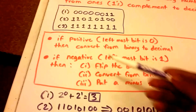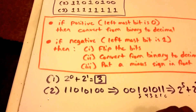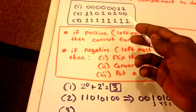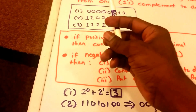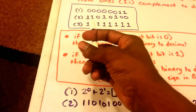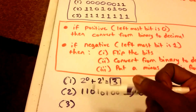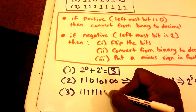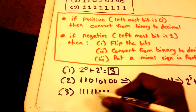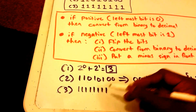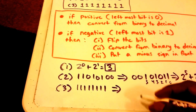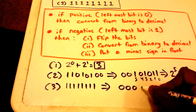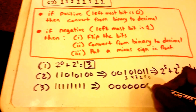The last example is a bit unusual. The leftmost bit is a one, so it's negative and we need to flip the bits. Rewriting it: all eight bits are ones — 11111111 — and flipping them all gives us eight zeros: 00000000.